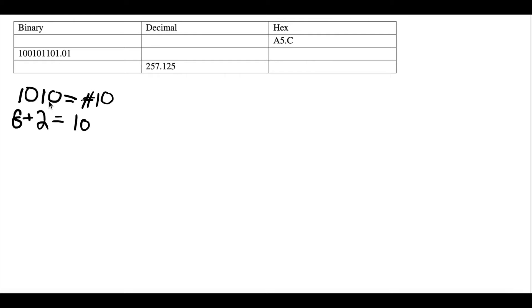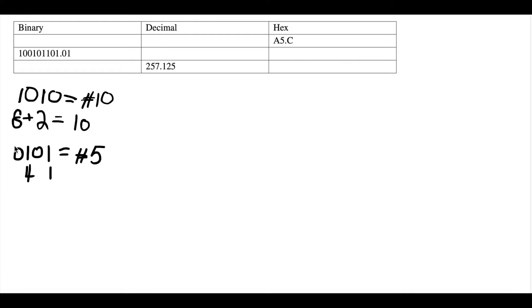So you know that 1010 represents our A. Now let's do the same thing for number 5. How do we put 5 into binary? In four digits it would be 0101. 2 to the power of 0 is equal to 1, and because there's a one we put a one. 2 to the power of 1 is equal to 2, but because it's a zero we put a zero. 2 to the power of 2 is equal to 4, and because there's a one we put a four. 2 to the power of 3 is equal to 8, but because there's a zero we leave it. So 4 plus 1 equals 5.